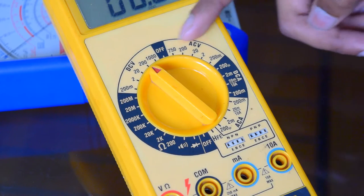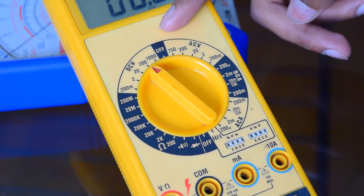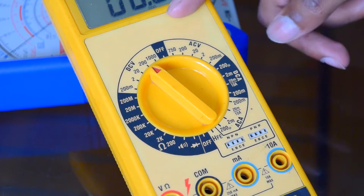A multimeter has a range selector switch with which you can change to different ranges and measure the units according to your requirements.